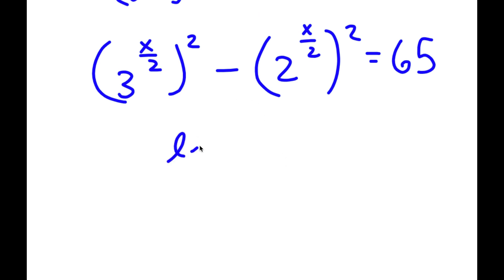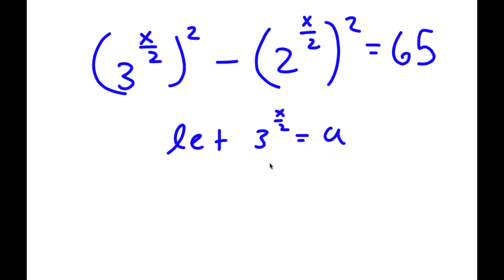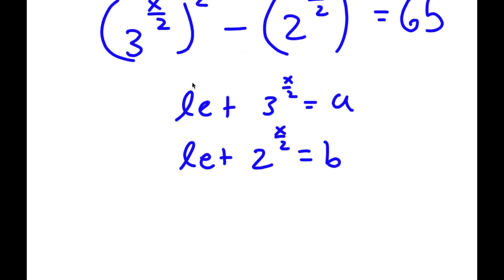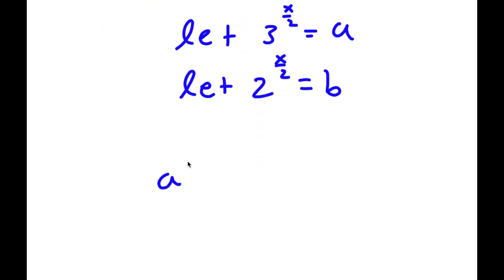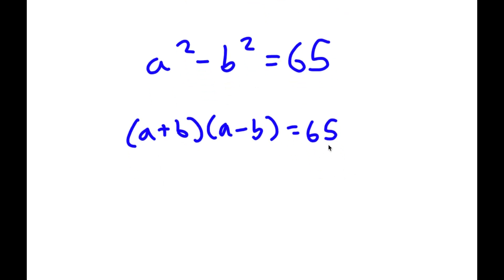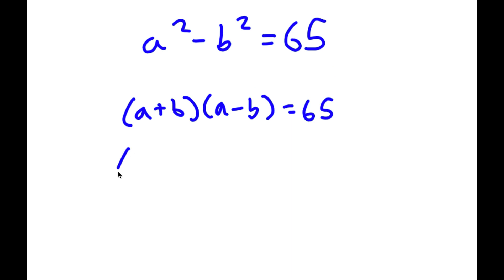Now, I'm going to let 3 to the power of x over 2 equal to the variable a, and 2 to the power of x over 2 equal to the variable b. So now I have a squared minus b squared is equal to 65. And a squared minus b squared is the same thing as a plus b times a minus b, which is equal to 65. And 65 I can rewrite as 13 times 5.